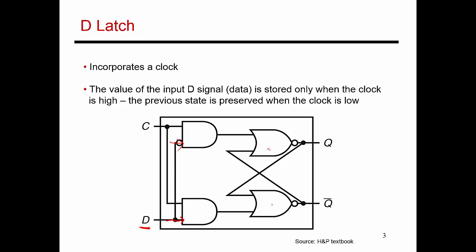Let's walk through what's happening. Let's say that the clock just went high and is staying in its high state. That means both the AND gates have one of their inputs as being high, so they're essentially passing whatever is their other input. In one case, it is D that is coming through, and in the other case, what's coming through is D-bar. So if D is 1, then D-bar is 0. That means at this moment, the SR latch is in a set state, and the value of Q becomes 1.